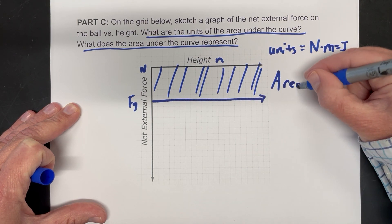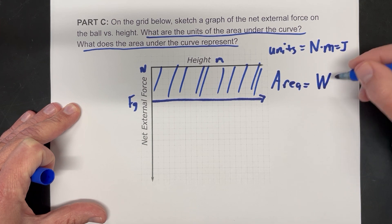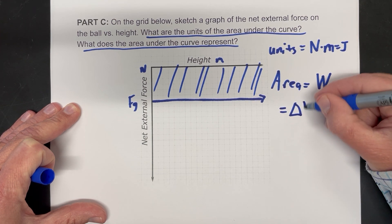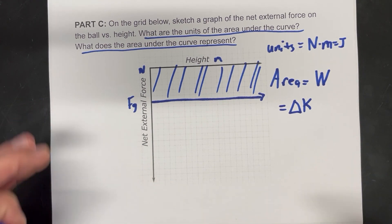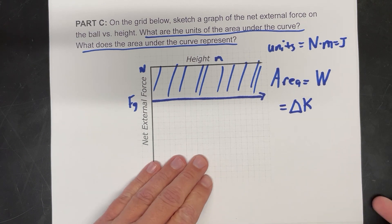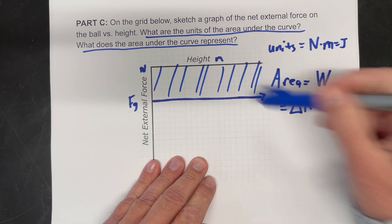So what does this area right here represent? That area equals the work done, which means it's also equal to the change in kinetic energy of the ball there. The work done by gravity.